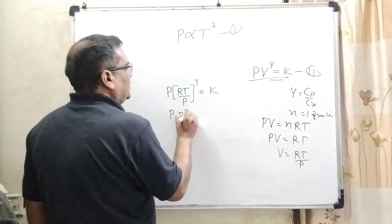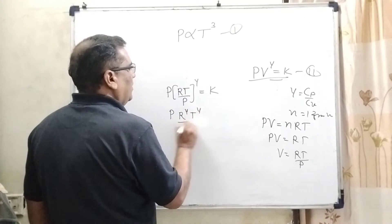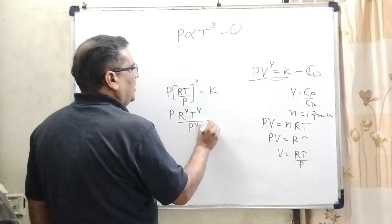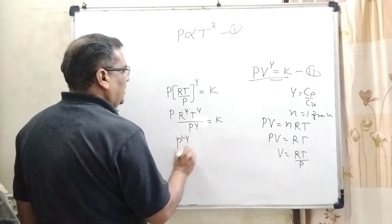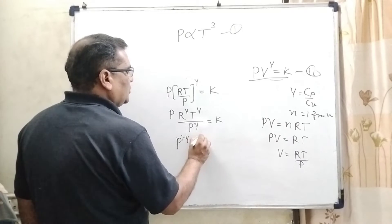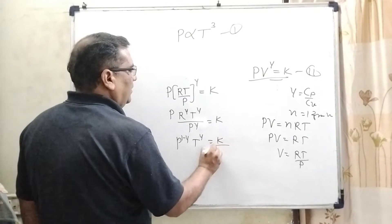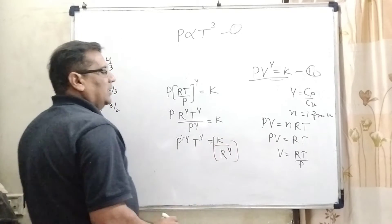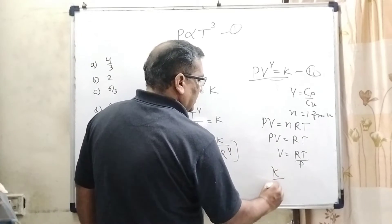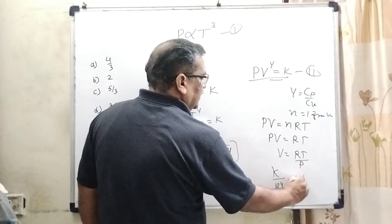Then P, R raised to the power gamma, T raised to the power gamma upon P raised to the power gamma equal to K. We have considered another constant, R raised to the power gamma, consider this K dash.